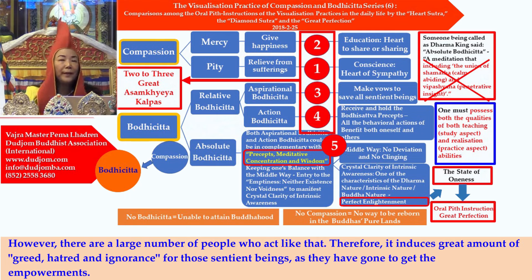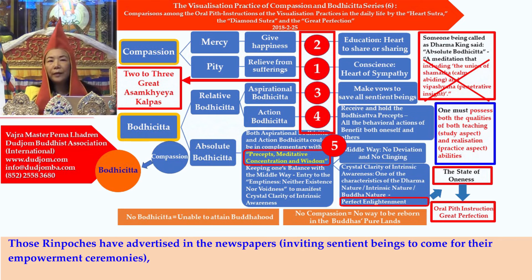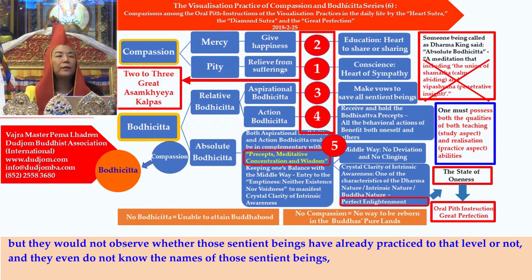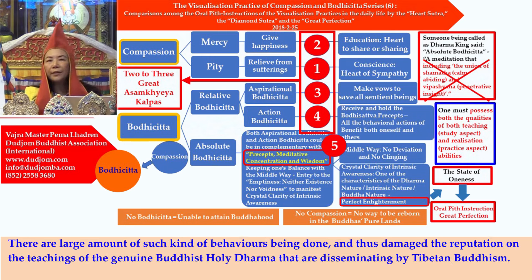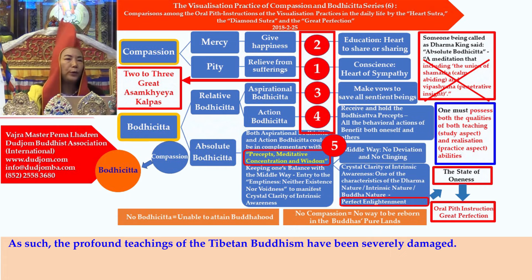There are a large number of people who act like that. Therefore, it induces great amounts of greed, hatred, and ignorance for those sentient beings who have gone to get the empowerments. Those Rinpoches advertise in the newspapers, inviting sentient beings to their empowerment ceremonies, but they do not observe whether those sentient beings have already practiced to the required level — they don't even know the names of those sentient beings — yet they just confer empowerments anyway. Such behaviors damage the reputation of the genuine Buddhist holy dharma disseminated by Tibetan Buddhism.